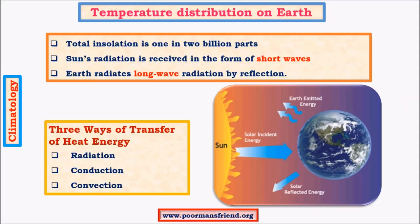Earth receives all its energy from the sun in the form of light. Some energy is received from the interior of the earth, but this is highly negligible as it is in very small quantities. The major source is the sun. We receive sun's rays in the form of short wave radiation, also called ultraviolet radiation. Earth acts as a heat converter — it receives light, converts it into heat, and radiates it back into space in the form of long wave radiation, which is infrared radiation.